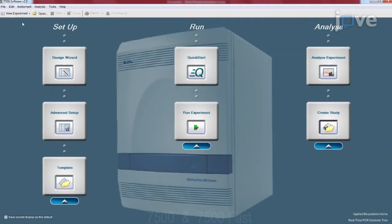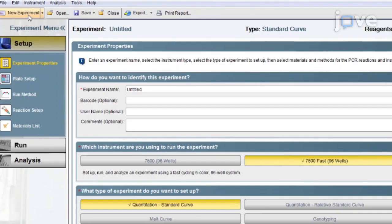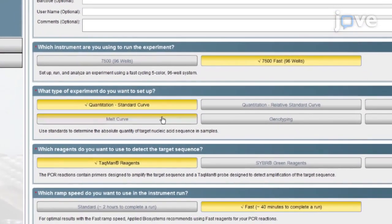Click the New Experiment button to begin setting up a TSA experiment. In the Experiment Properties tab, click the Melt Curve option when asked.